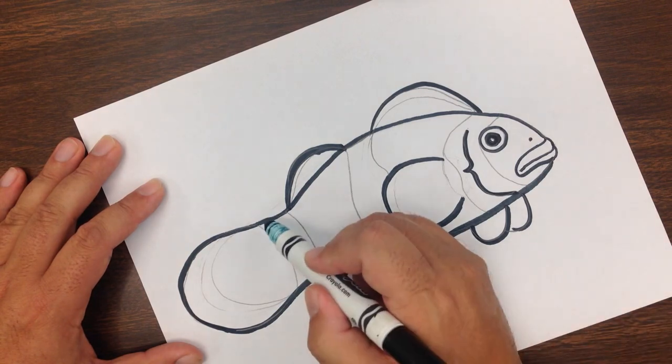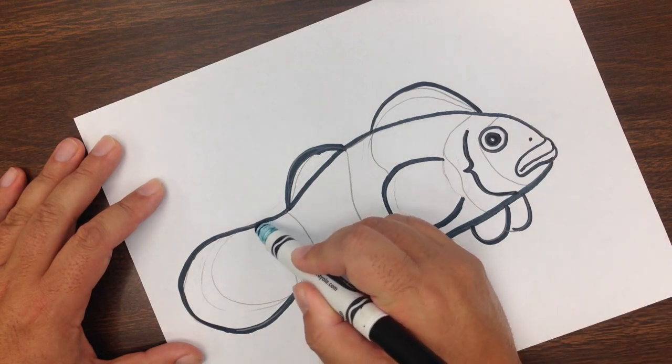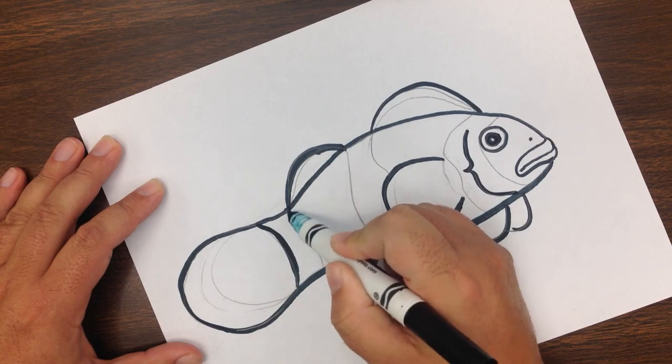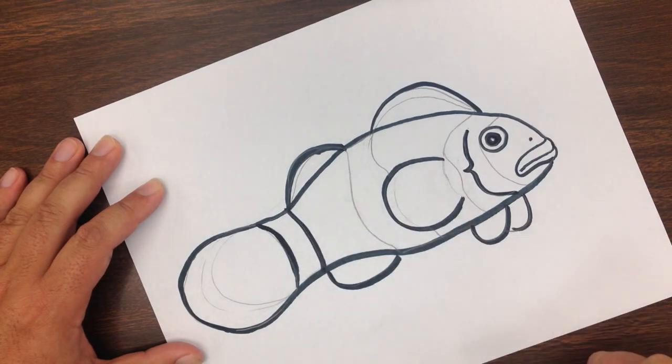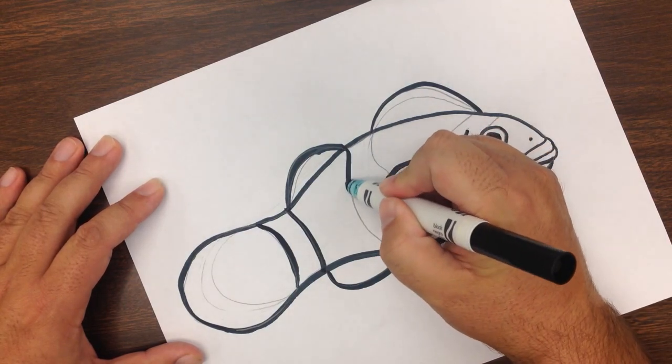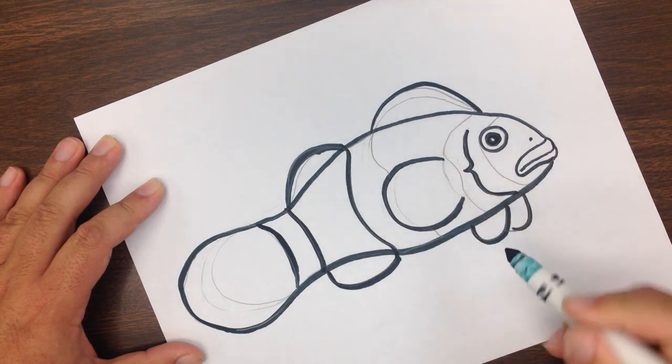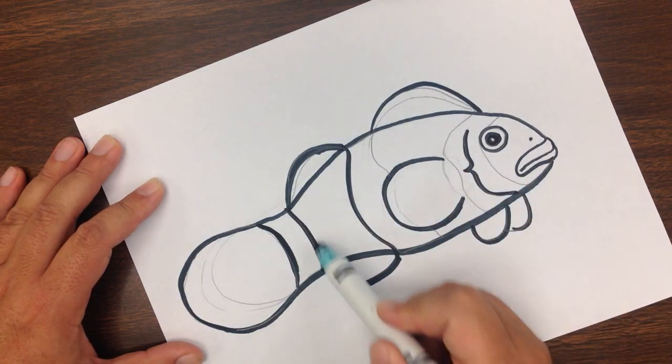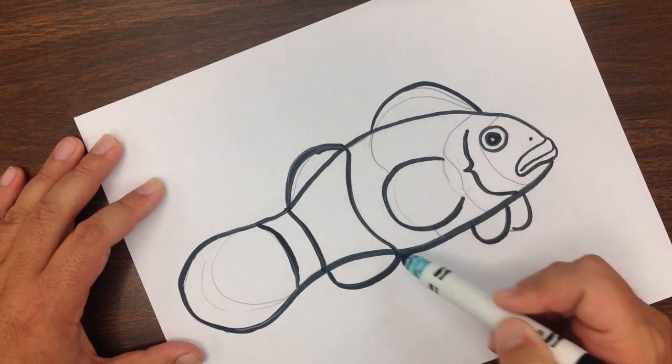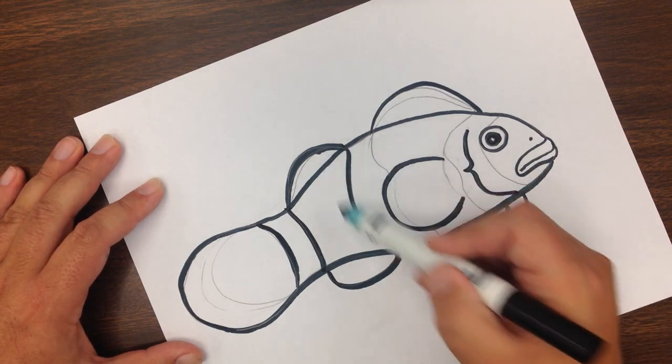Now for the pattern, which is another really unique thing about this fish. I'm going to put two lines here, another line here. Notice this line begins and ends, and this line also begins and ends where these two fins are.